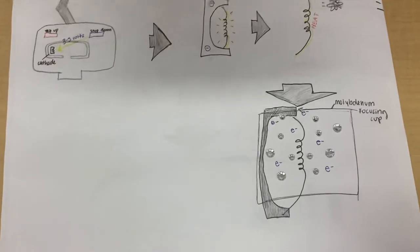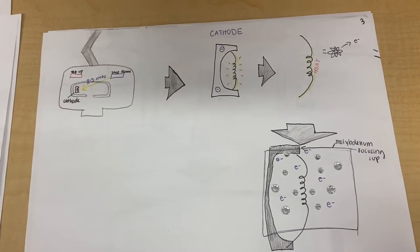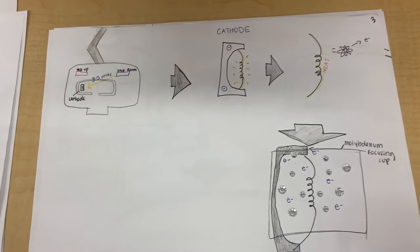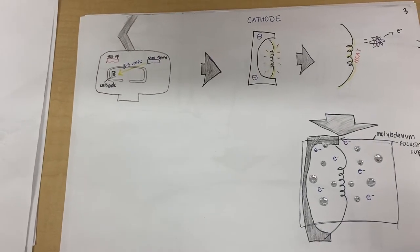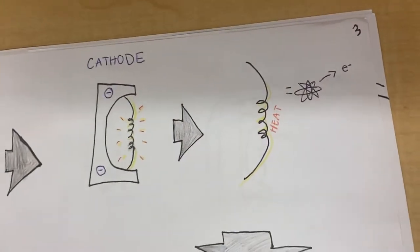Depending on the MA setting, that will determine how many electrons are going to be produced and how hot the filament will be. The heat will then let the electrons separate from their atoms, also known as thermionic emission.